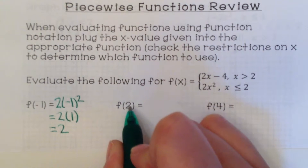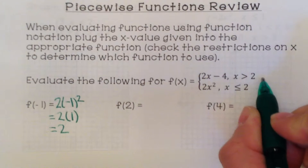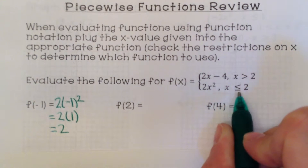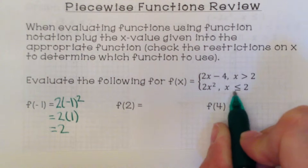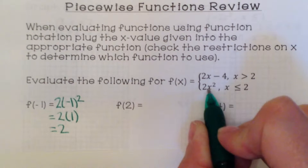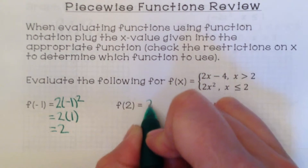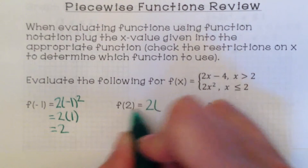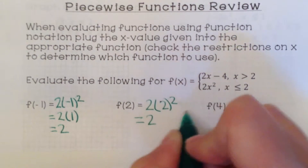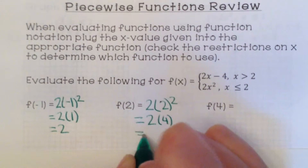Now we have f of 2, where x is 2. The first piece is strictly greater than 2, which does not include 2. The bottom piece is less than or equal to 2 — the 'or equal to' tells us it does include 2. So we use 2x squared again: 2 times 2 squared. Order of operations: 2 squared is 4, and 2 times 4 is 8.